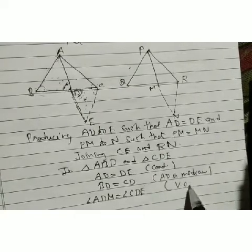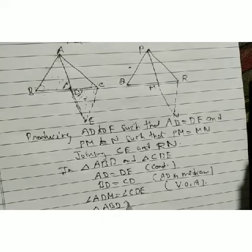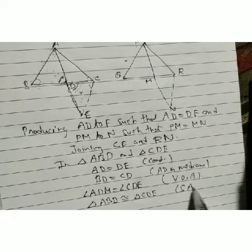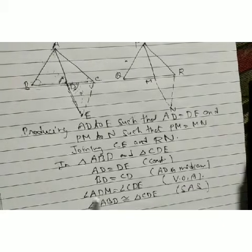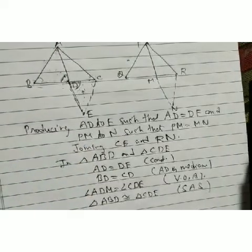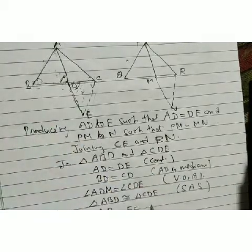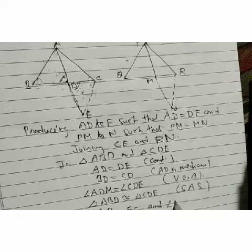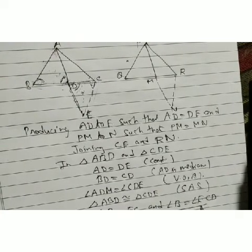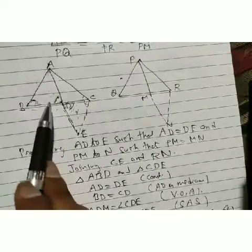In triangle AEC and triangle PNR: AC/PR is given, AE/PN follows from the construction, and EC/NR follows from CPCT (since AB = EC and PQ = NR and AB/PQ is given). So AC/PR = AE/PN = EC/NR.